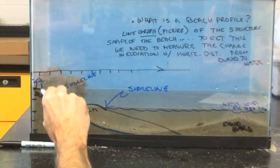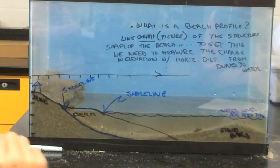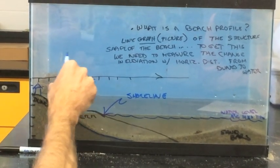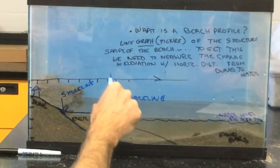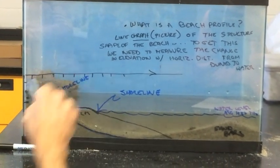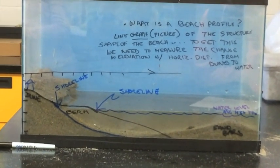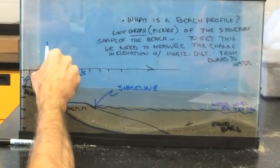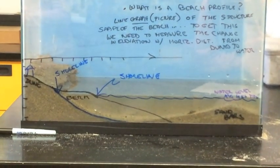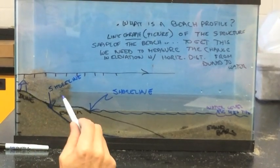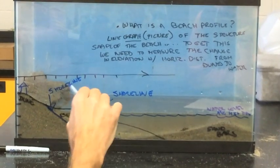If there are people that live at the beginning of the beach, here at the top of the beach, are they more concerned about the profile or the position of the shoreline? The position of the shoreline. But what causes the change in the position? The erosion. The change to the profile.